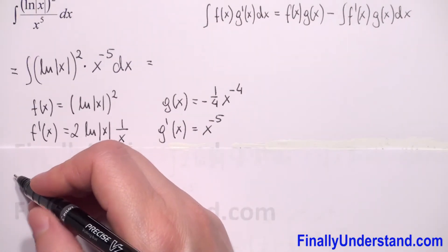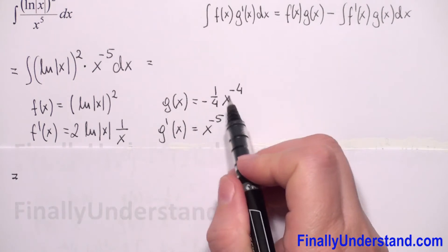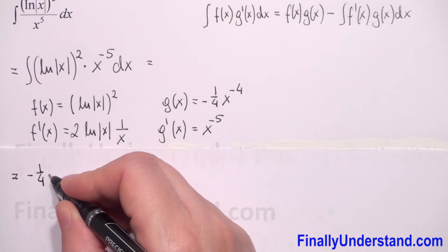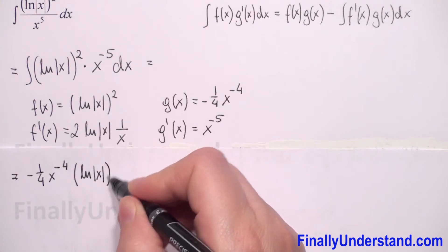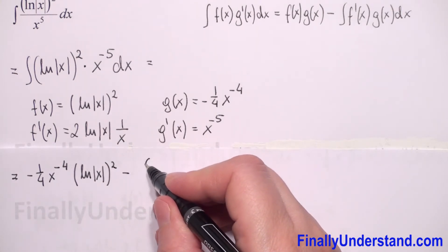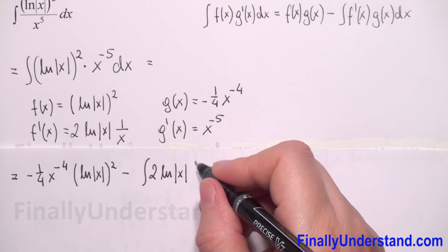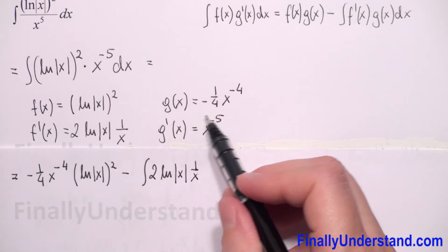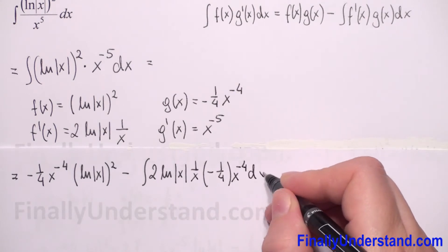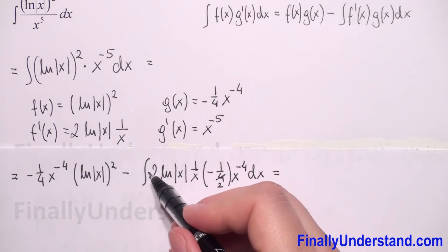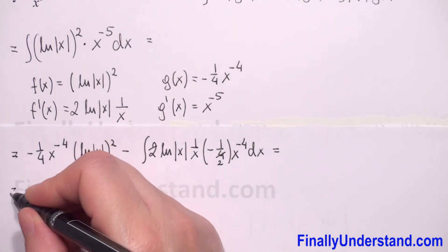Now we just use the integration by parts formula — we put f times g. So we will have negative 1 over 4 x to the power negative 4 times the square of the natural logarithm of |x|, minus the integral of f'(x) times g(x). That is: natural logarithm of |x| times 1/x times negative 1 over 4 x to the power negative 4 dx.